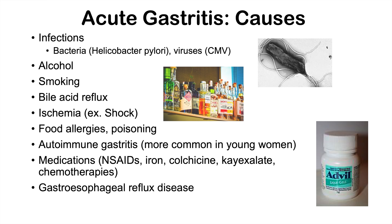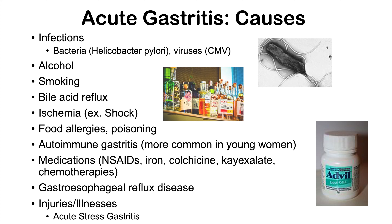Gastroesophageal reflux disease can also lead to gastritis, as can certain injuries and illnesses. The physiological stress associated with significant injuries or illnesses can lead to what we call acute stress gastritis. As mentioned, all of these causes lead to an imbalance where destructive processes overcome the protective mechanisms in the gastric mucosa.